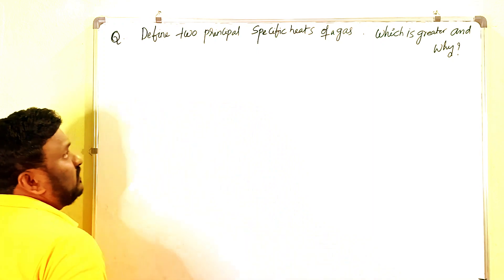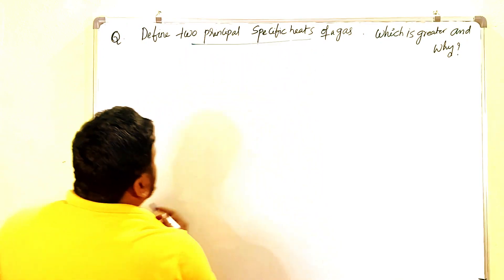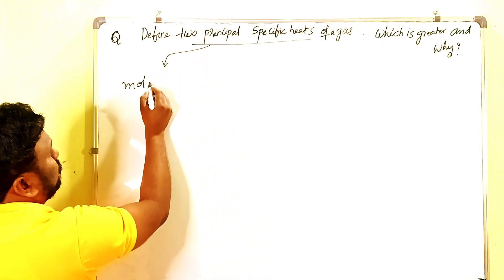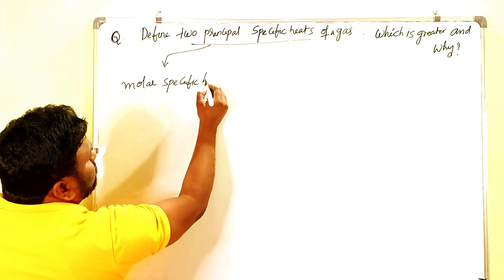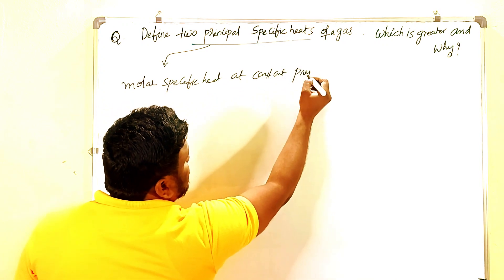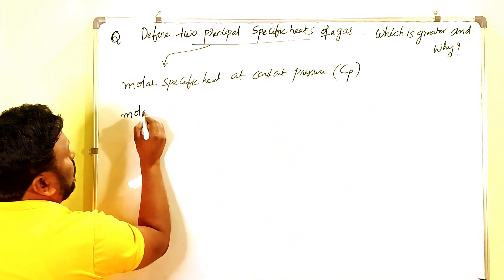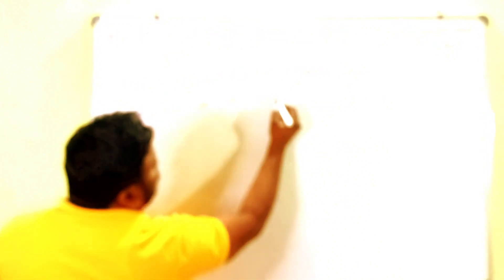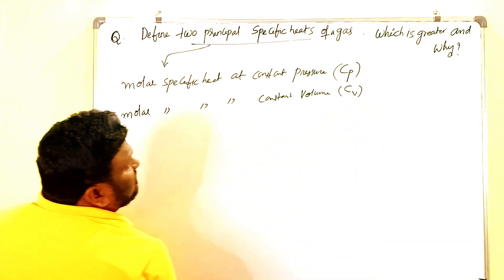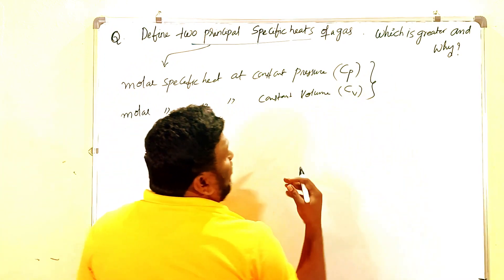The question asks us to define the two principal specific heats, which is greater, and why. The two principal specific heats are: number one, molar specific heat at constant pressure, denoted by Cp, and number two, molar specific heat at constant volume, denoted by Cv.